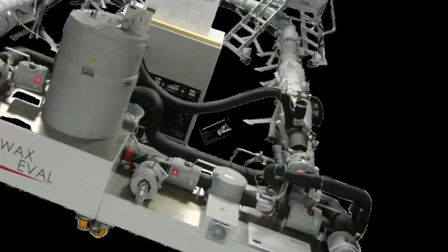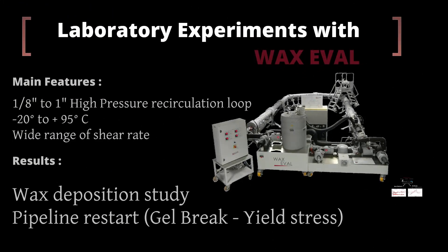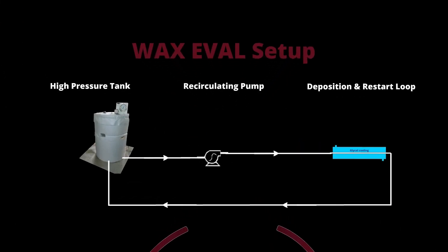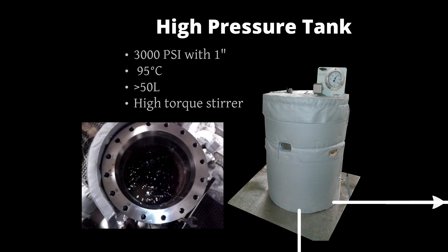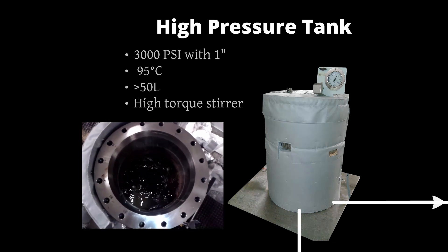The wax eval includes high pressure wax loops from 1/8 inch to 1 inch to cover a wide range of shear stress. The temperature range is minus 20 degrees Celsius to plus 95 degrees Celsius. The two main experiments operated on this device are the wax deposition study and the pipeline restart test, also known as gel break or yield stress measurement. Any wax loop from 1/8 to 1 inch are based on the same PID. Maximum pressure 3000 PSI with 1 inch loop, but other loop diameters are available offering alternative pressure. The sample oil is stored in a large high pressure tank.